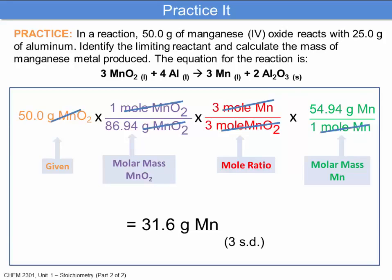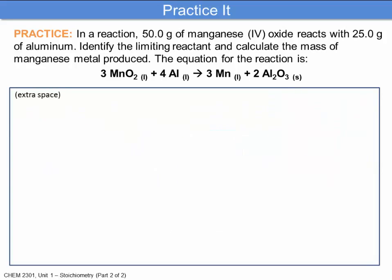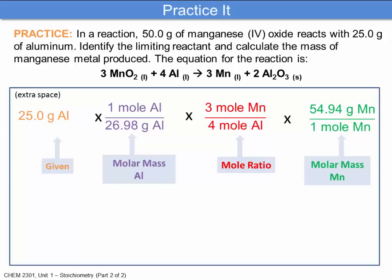We've only done manganese(IV) oxide so far, so we also need to look at the aluminum. Starting with 25.0 grams of aluminum, we multiply by the molar mass, use the mole ratio, then multiply again by the molar mass of manganese. We end up with an answer of 38.2 grams of manganese to three significant digits.